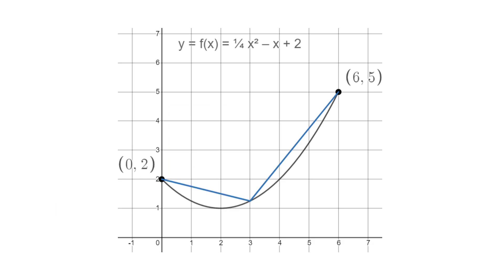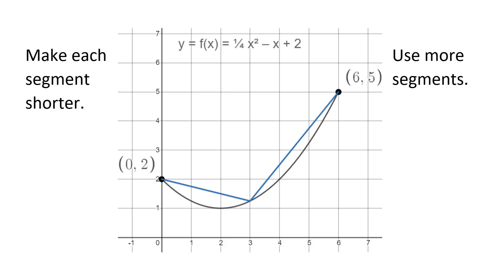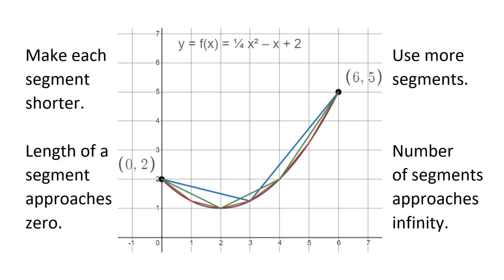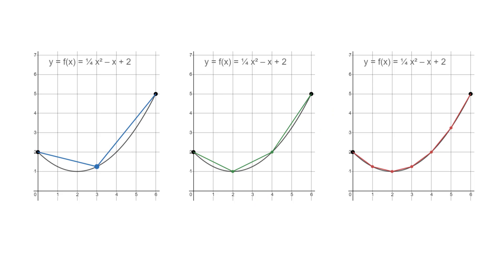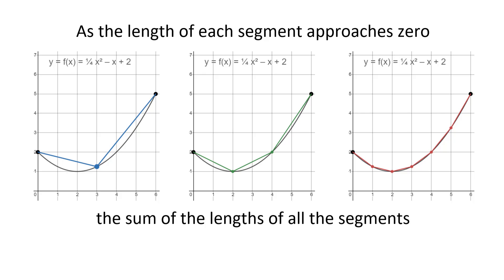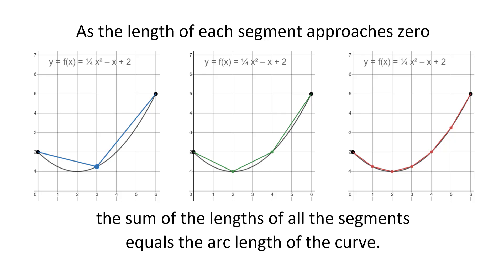Now look at what happens if we make the segments shorter and use more of them. As the segments become shorter, they follow the curve more closely. In the limit, as the length of each segment approaches zero, so that the number of segments approaches infinity, the segments follow the curve perfectly. In the limit, as the length of a segment approaches zero, the sum of the lengths of all the segments is exactly equal to the arc length of the curve.